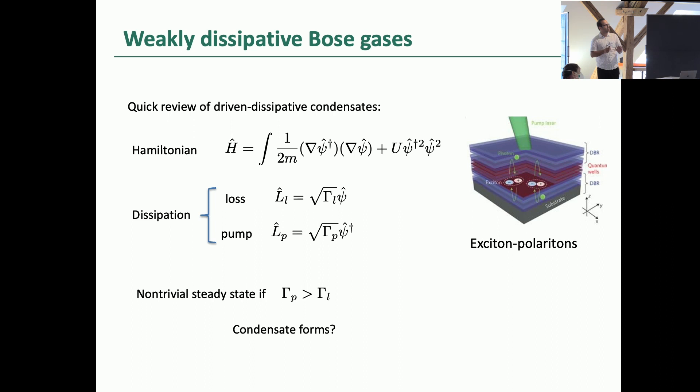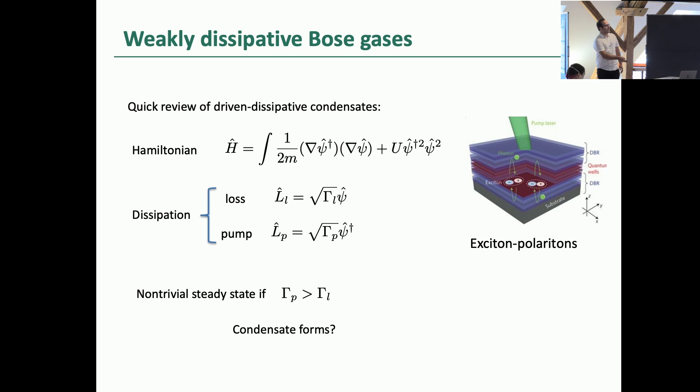Let me do a very quick recap of driven-dissipative condensates in general. This is a system described by this kind of Hamiltonian - a Bose-Hubbard Hamiltonian, interacting bosons. In this context, think about it as weakly interacting bosons. And you have some loss. In this context, these are exciton polaritons in semiconductor wells. So they are lossy. If you don't keep pumping the system, of course, you're losing everything. It's boring. So you pump the system, and when the pump is larger than the loss, you get something interesting. And then the question is whether you can get a condensate for the system. The answer is yes. In fact, driven-dissipative condensates emerge. We have experimental evidence for this.